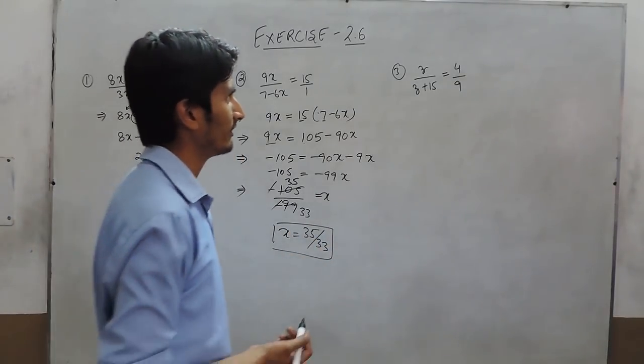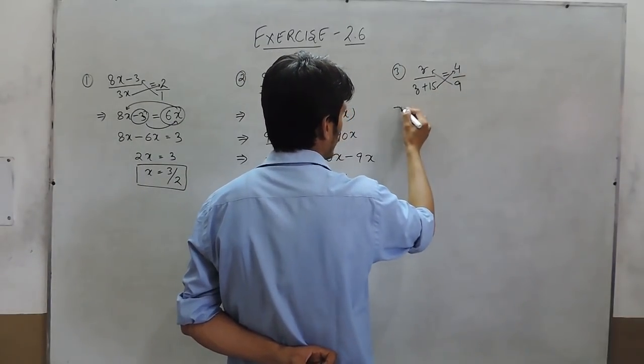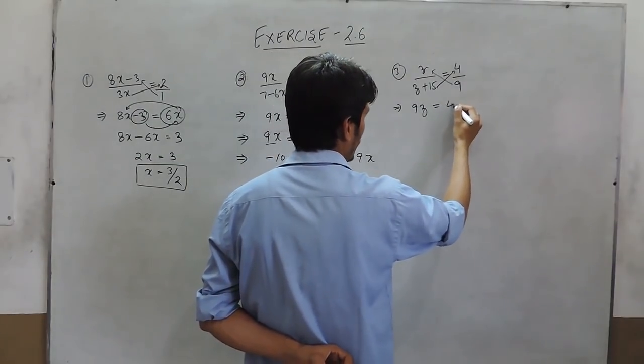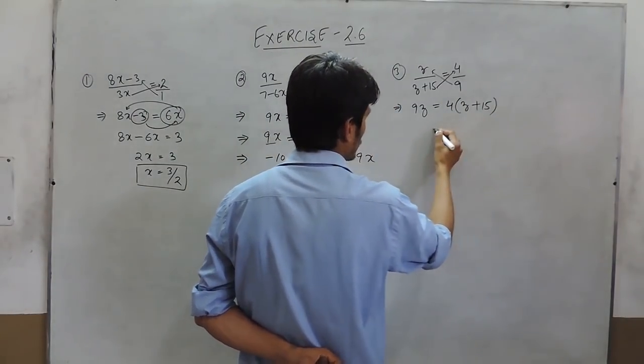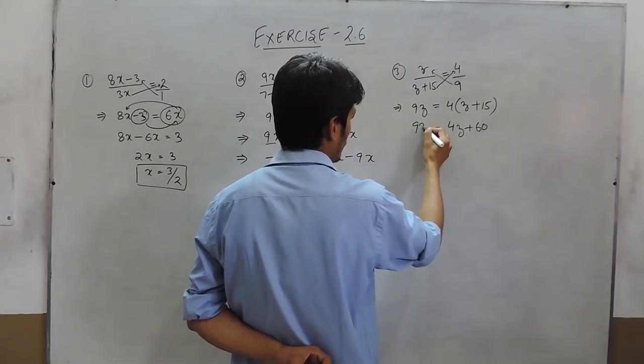In question number 4, again we have to cross multiply it. So when 9 is multiplied by z it is 9z. And 4 multiplied by z plus 15. So this is equal to 4z plus 60 and 9z.